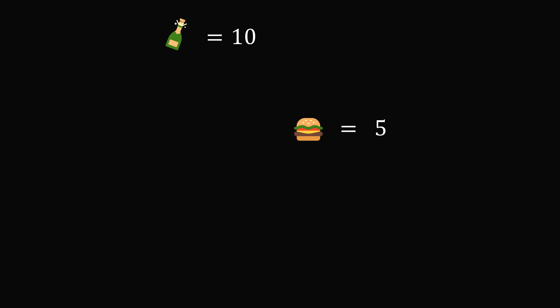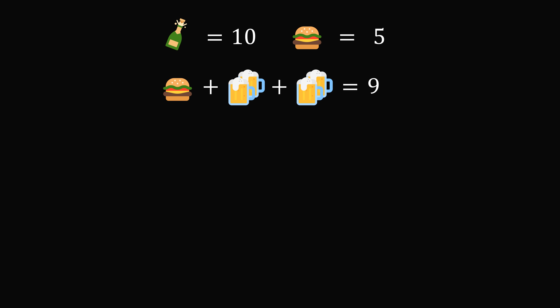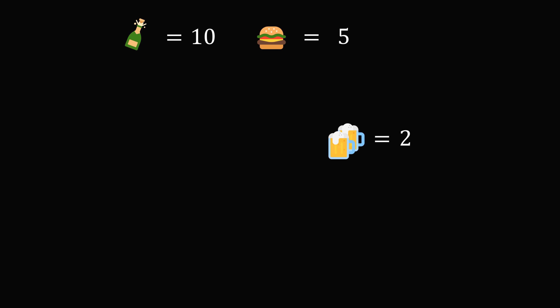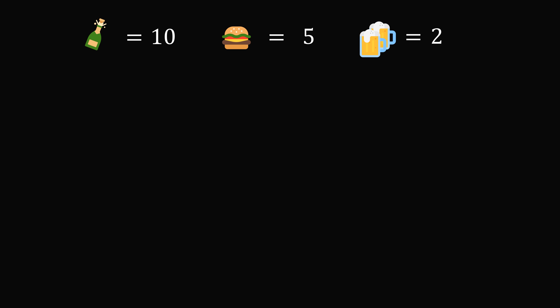We'll substitute this value into the third equation. So we have 5 plus a total of 2 multiplied by 2 beers is equal to 9. That means 2 multiplied by 2 beers is equal to 4, and so 2 beers is equal to 2.